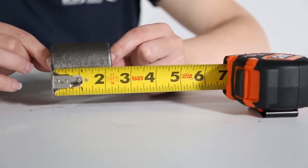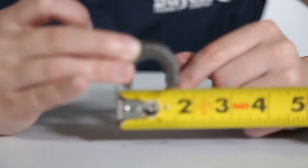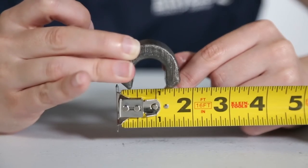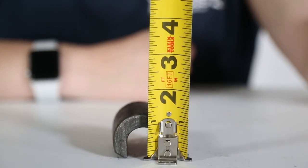The bracket measures 2 1/4 inches in length and 1 5/8 inches wide. The height of the bracket is 1 1/4 inches tall.